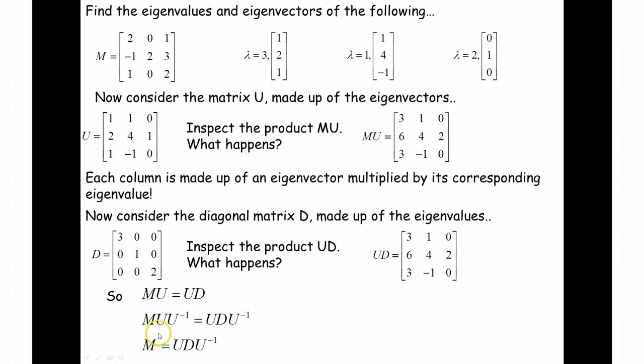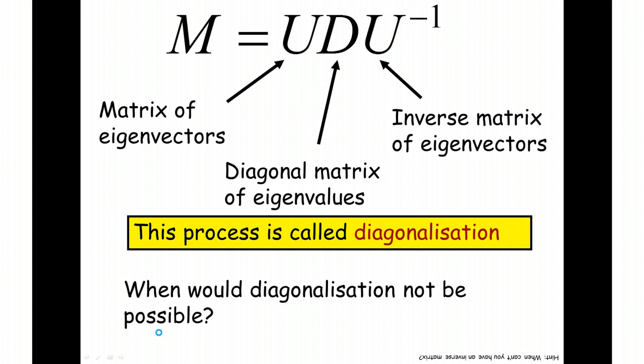And this process here is what we call diagonalization. I've split my matrix M into a matrix of my eigenvectors, my diagonal matrix of my eigenvalues, and the inverse matrix of my eigenvectors.